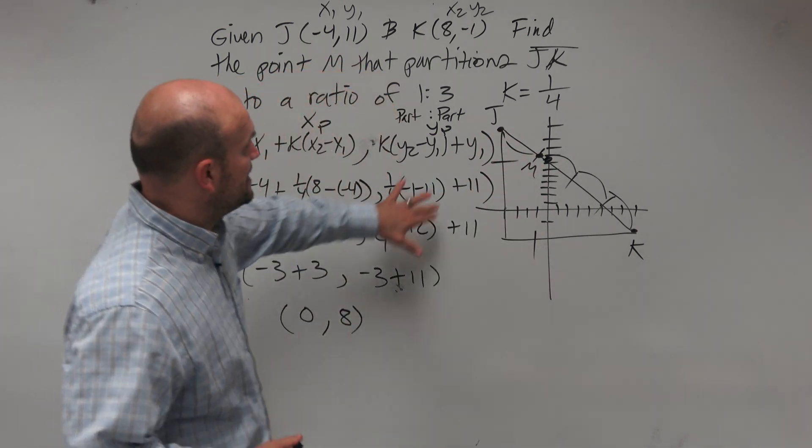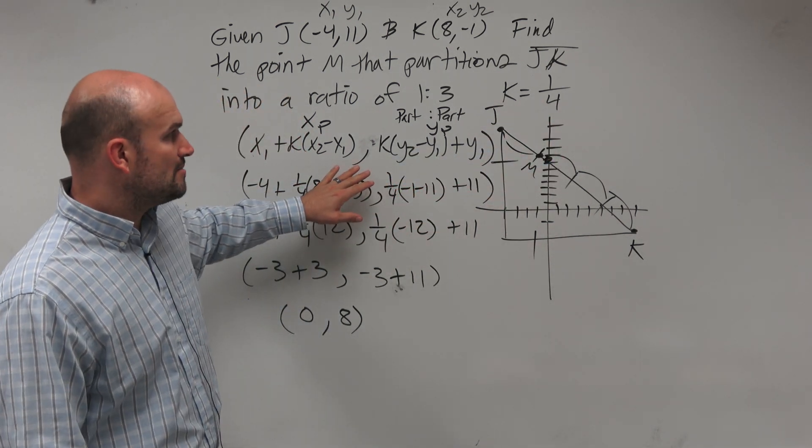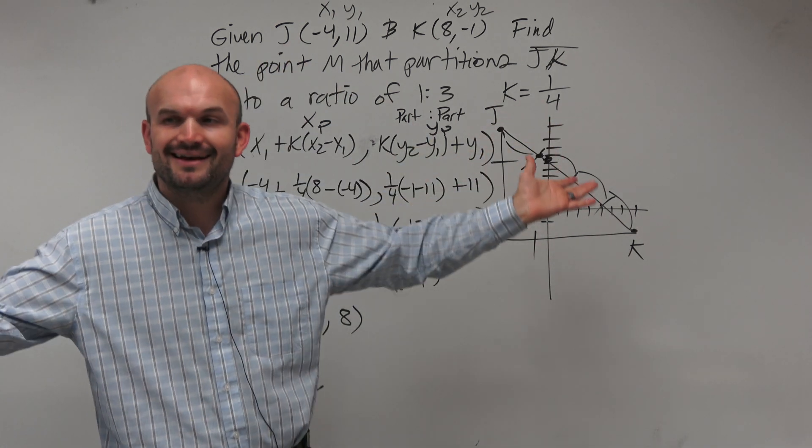So that's basically it. Make sure you identify your k as a part to whole. Make sure you have the formula. Make sure you have your two points. And that's all you need. Cheers.